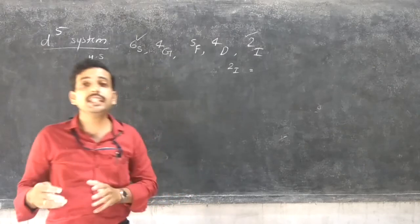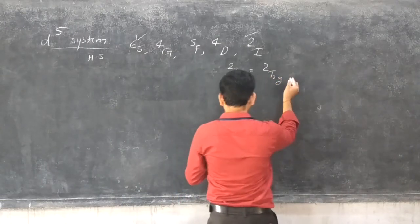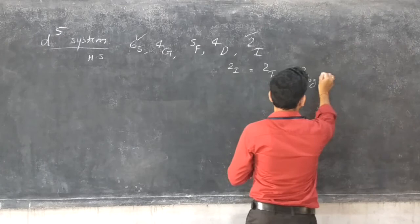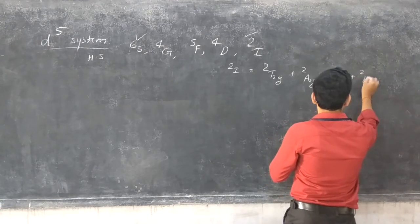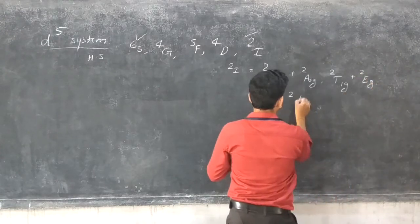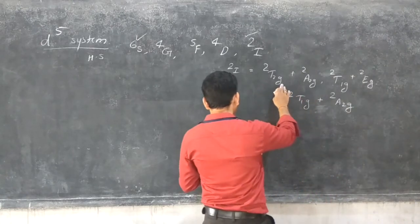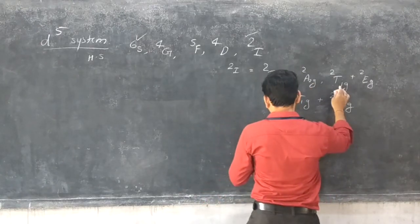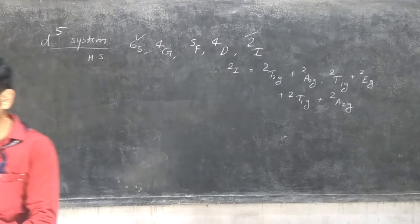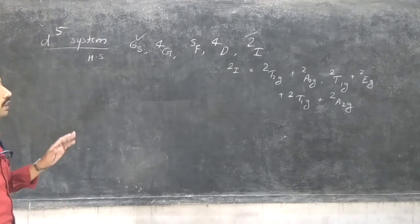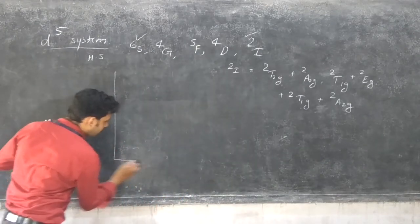Arranged in increasing order of energy, the terms should be: 2T2G, 2T2G, plus 2A2G, 2T1G, plus 2EG, 2T1G, plus 2A2G, and 2T1G. These are the Mulliken terms of the 2I system.